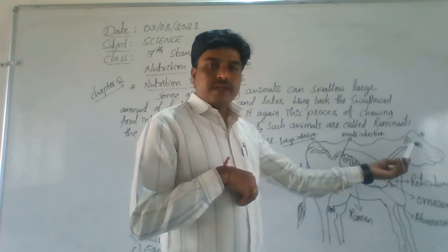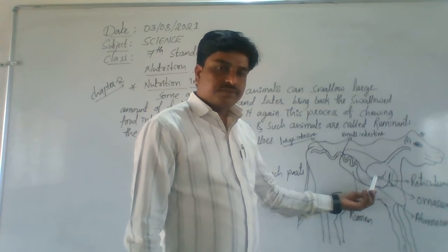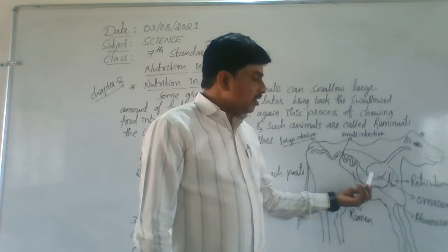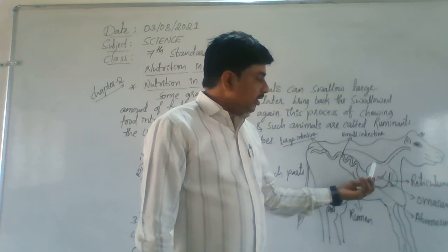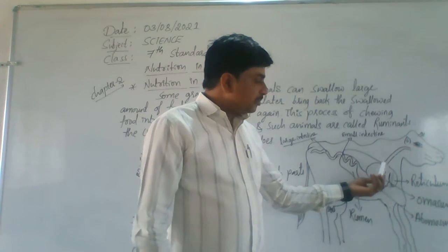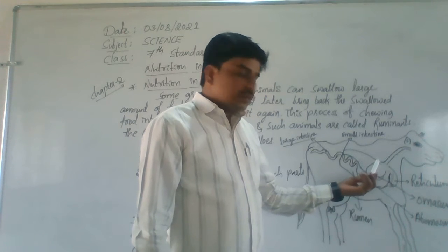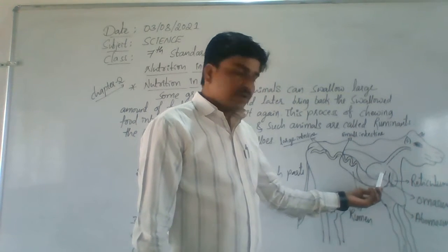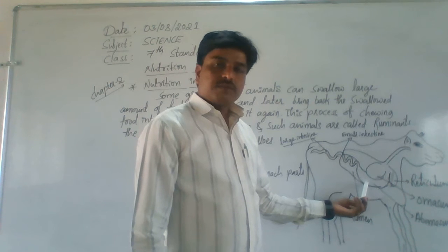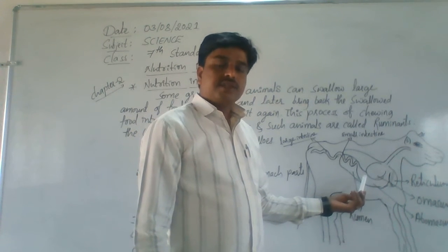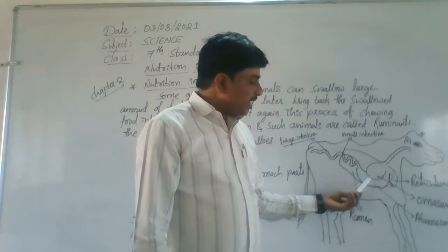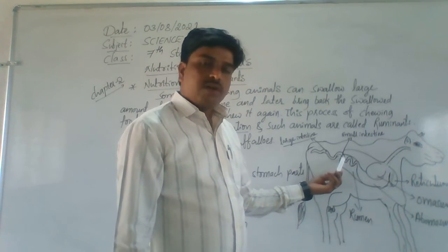That re-swallowed food then comes to the omasum, which is the third chamber of the stomach. Here in the omasum, excess water from the food is absorbed. Then the food passes through to the abomasum, the fourth chamber of the stomach, where complete digestion takes place.